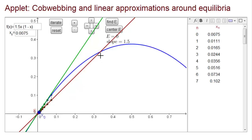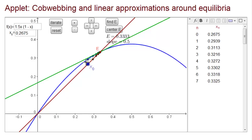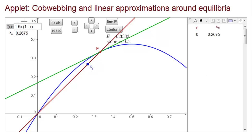What about the equilibrium at 1/3? Here the slope is 1/2. Since it's between 0 and 1, we know the equilibrium is stable. The trajectory approaches 1/3. What happens if we increase this coefficient from 1.5 to 2.5?